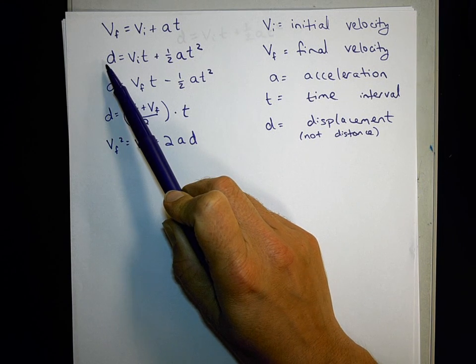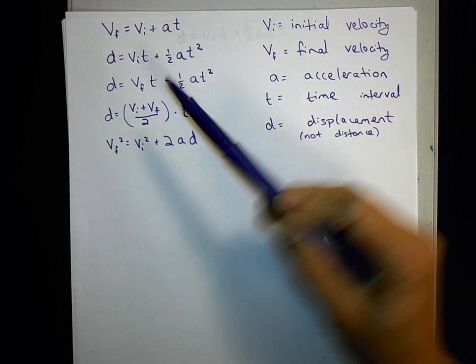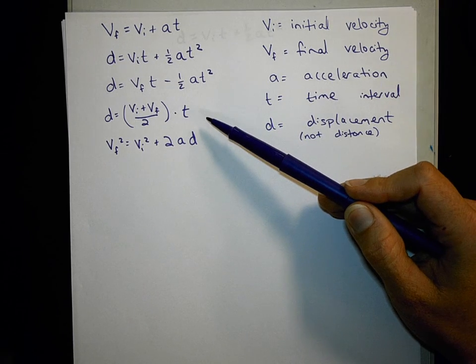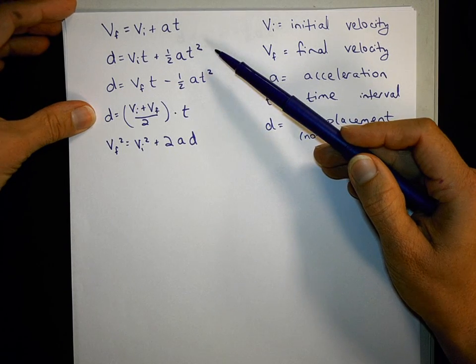What I'd like to do is derive the second equation, d equals v_i*t plus 1/2 a*t squared. This equation plus the next two really rely on the concept of area under a velocity graph. So let's take a look at where equation number two comes from.